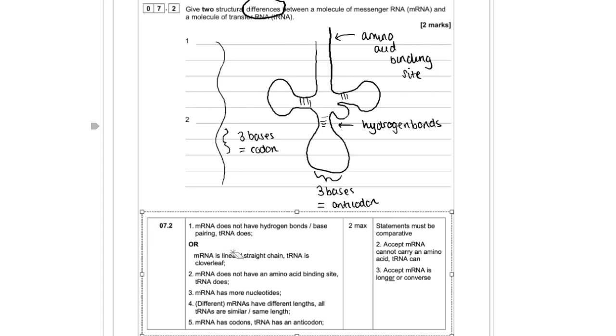We've got the one about the shape and the hydrogen bonds in the same point, because the hydrogen bonds are a direct effect of it being a cloverleaf shape. We've got our amino acid binding sites, the fact that it's longer or has more nucleotides, different lengths, and the codons versus the anticodon.